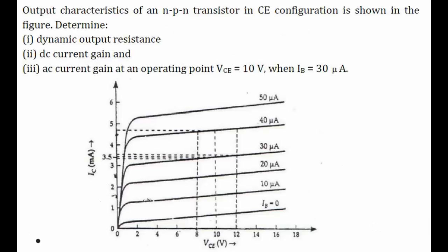In the third part we have to find the AC current gain, that is βAC. The expression for βAC is ΔIC divided by ΔIB. So in the figure our IC varies from 4.7 to 3.5.